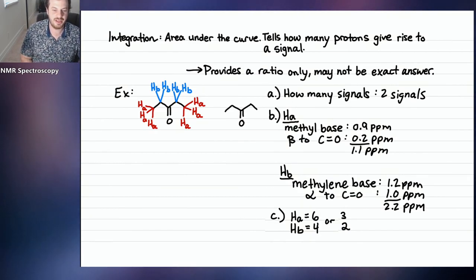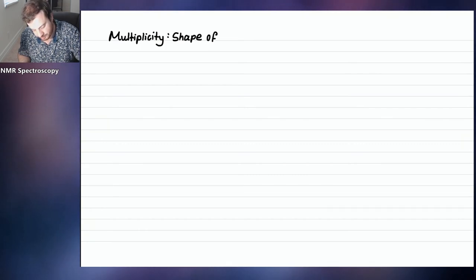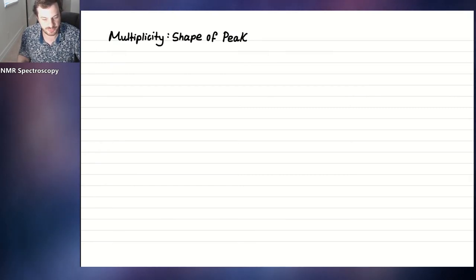Now we're on to number three — the third thing you can tell from the NMR spectrum, and to me this is the most interesting. It's something called multiplicity, and it has to do with the shape of the peak. It turns out that signals in NMR sometimes have different shapes, and this gives information about the number of neighboring protons.